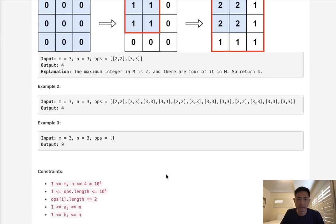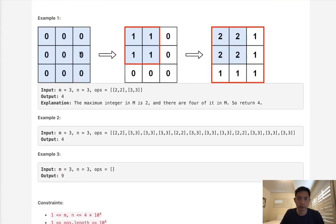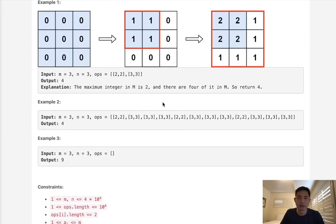So at first glance this seemed like a problem where I just recreate this matrix, and then I can just go through the operations and increment every cell by 1, but that's not going to work because immediately you'll get a memory limit exception. So that told me that we don't want to create any temporary matrix, we want to figure out if there's a way to do this in constant space.